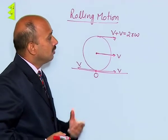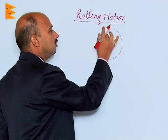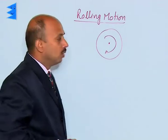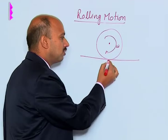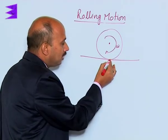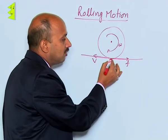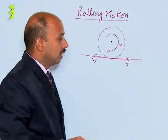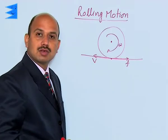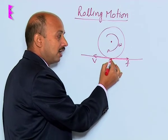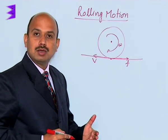We can also understand it this way: suppose you have a disc spinning about its own axis with angular velocity omega. When it is placed on a surface where friction is present, the contact point is moving to one side with velocity V but the frictional force acts in the forward direction. This frictional force accelerates the point of contact forward, and after some time the velocity in the forward direction becomes equal to the rotational surface velocity. Once these two velocities at the point of contact are equal, the contact point comes to rest and then we say the body is doing pure rolling without slipping.